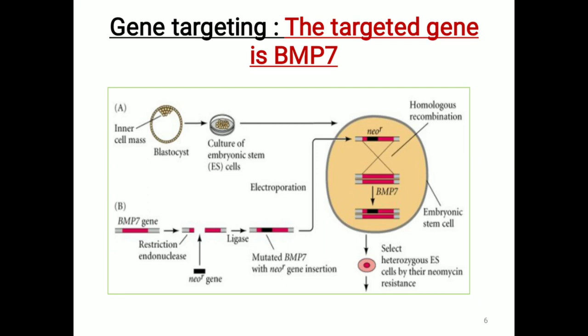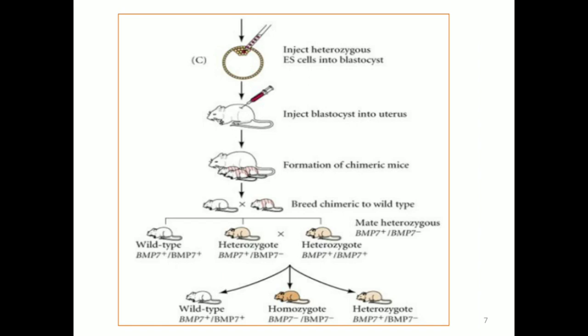We will select the heterozygous embryonic stem cells by their neomycin resistance. Then we will inject the heterozygous selected embryonic stem cells into the blastocyst, and then inject that blastocyst into the uterus. In the F1 generation, we will get the chimeric mouse. But we need a completely knockout mouse, so we will cross that chimeric mouse first with the wild type mouse. In the F2 generation, we will get wild type mice with BMP7+/BMP7+, and heterozygotes with BMP7+/BMP7-. Then to obtain the F3 generation, we will cross the heterozygotes. In the F3 generation, we will get wild type with BMP7+/BMP7+, homozygotes with BMP7-/BMP7-, and heterozygotes with BMP7+/BMP7-. So in the F3 generation, we will get a completely knockout mouse — a homozygous knockout.